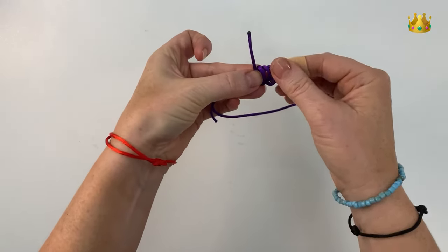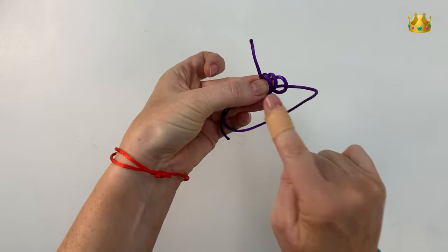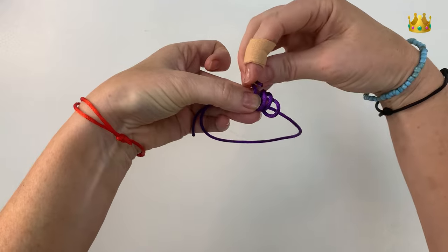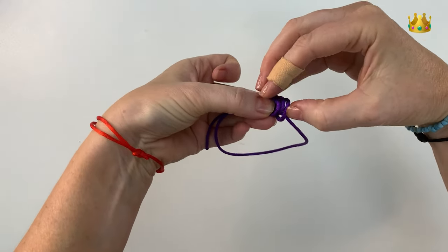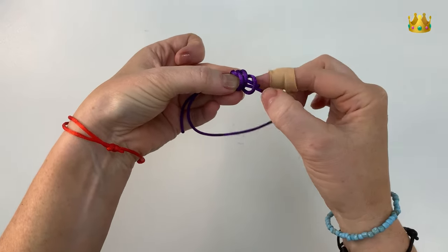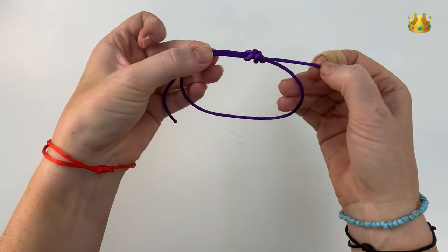Once we've got our three little loops here we're going to gently bend this end piece around and poke it down all three of our loops, pulling it out the right hand side, and then gently pulling our knot down nice and tight and tidy.